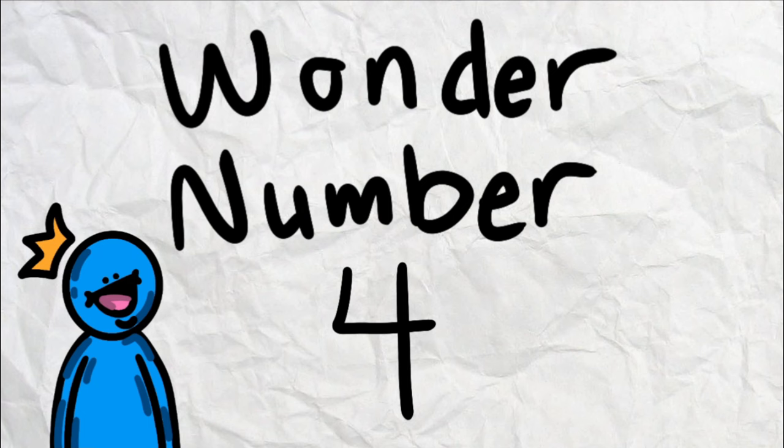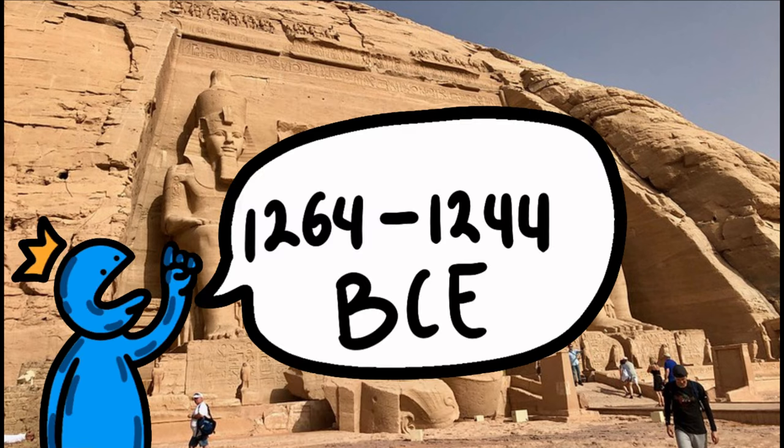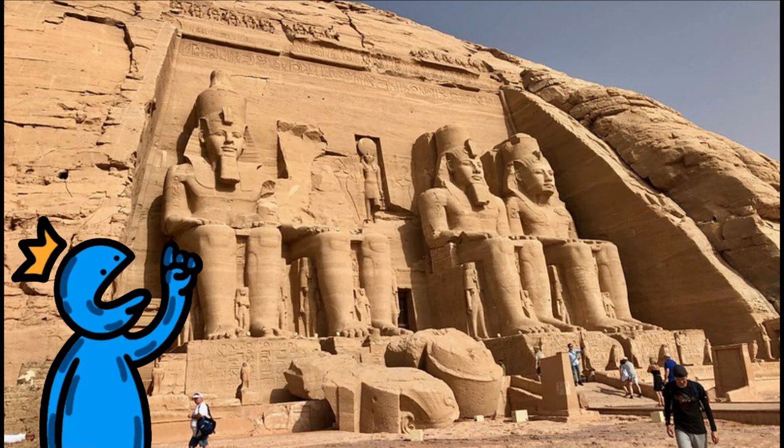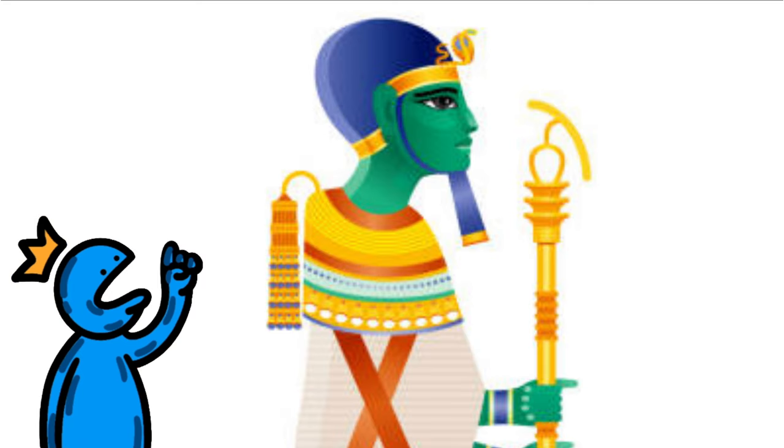Wonder number four, The Great Temple of Ramses II, also known as Abu Simbel, was constructed around 1264 through 1244 BCE. It was obviously used to honor Pharaoh Ramses II and the gods of the moon, Rahorita and Pata.